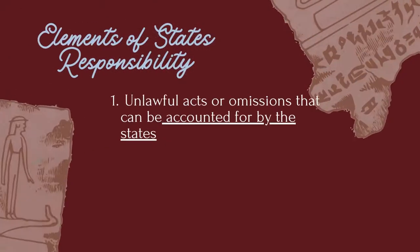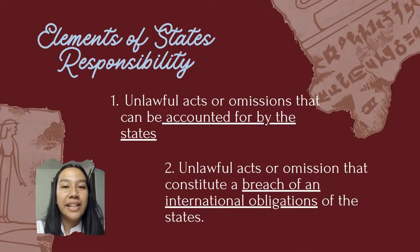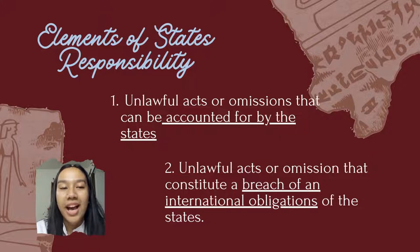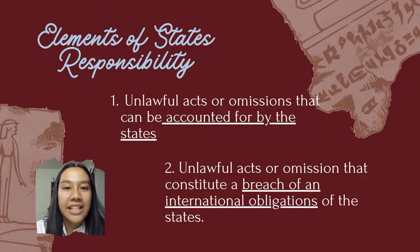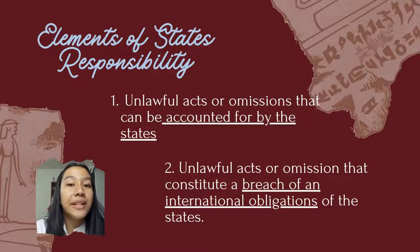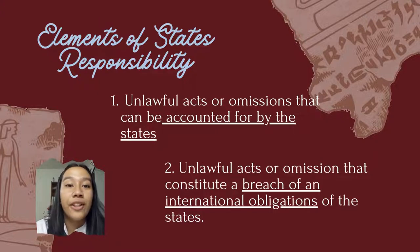In general, state's responsibility comprises two elements. The first is unlawful acts or omissions that can be accounted for by the state. International responsibility that does not cause injury — be it moral or material — may still involve consequences to the offending state.